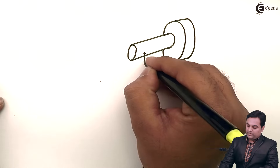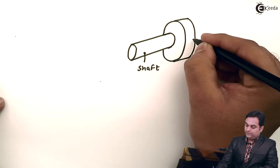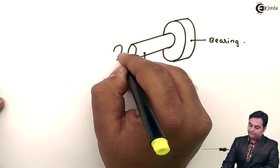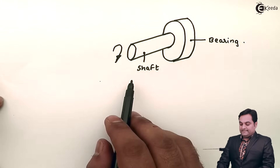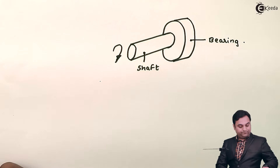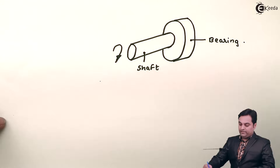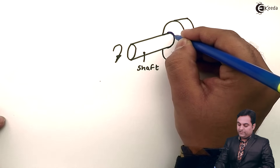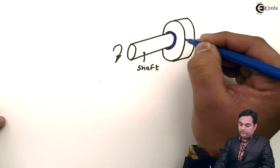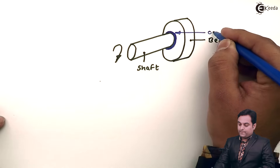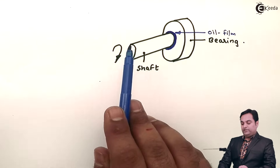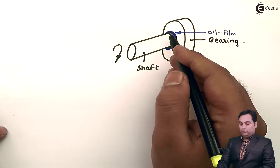Here we have a shaft, and the member inside which it is supported is called a bearing. This shaft rotates inside the bearing. The contact between the shaft and bearing is maintained with the help of an oil film, used as lubrication. Both shaft and bearing are made of metal, so when the shaft rotates there are chances of metal-to-metal rubbing — to avoid that, we lubricate the shaft.